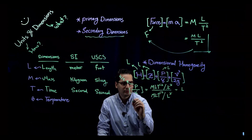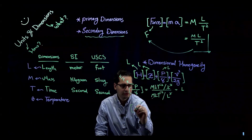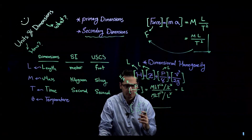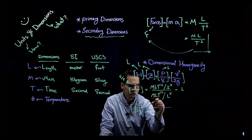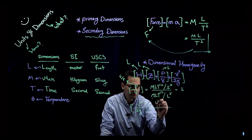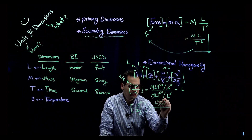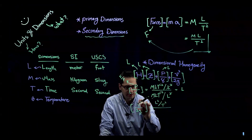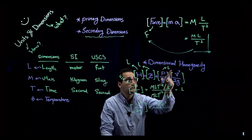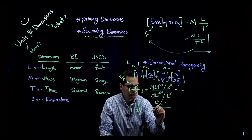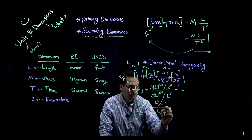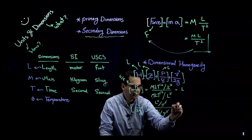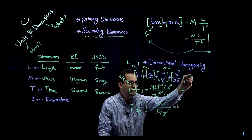Now for the last term, velocity squared divided by 2g. Velocity is distance divided by time, so velocity squared has dimensions L² divided by T². The constant 2 has no dimensions. G is acceleration due to gravity, which has dimensions L divided by T². Dividing L²/T² by L/T²: the T² cancels with T², and L² divided by L gives L. So this third term also has a dimension of L.